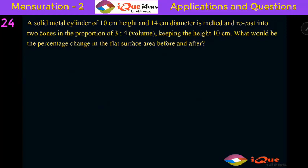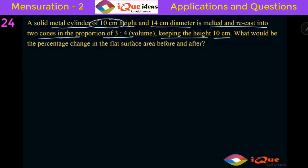Now let's take up the next question. It's a very important and very tricky question — you have to be really careful. A solid metal cylinder of 10 centimeter height and 14 centimeter diameter is melted and recast into two cones in the proportion of volume 3 is to 4, keeping the height 10 centimeter. So the original height of the cylinder and the height of the new cones is also 10 centimeter.